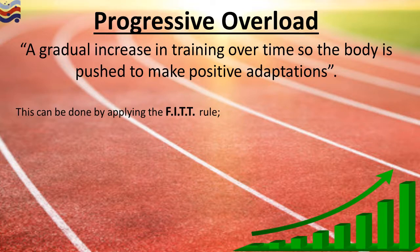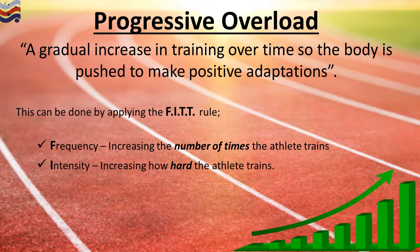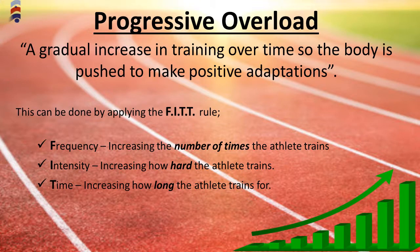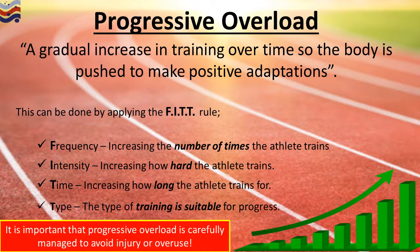Progressive overload can be achieved by applying the FITT rule. Frequency: increase the number of times the athlete trains. Intensity: increase how hard the athlete trains. Time: increase how long the athlete trains for. And Type: develop the type of training so that it is suitable for progress. It's really important that progressive overload is managed carefully to avoid injury — if you overload the athlete too quickly, injury can occur.